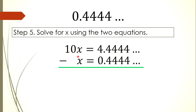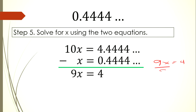Subtracting: 10x minus x is 9x. The repeating decimal parts cancel, leaving 9x = 4. To find x, divide both sides by 9. Therefore, x = 4/9.